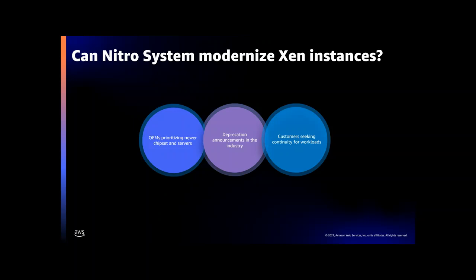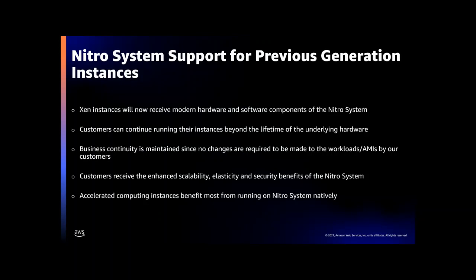AWS is in a unique position due to our size and 15 years of history. Today we have millions of customers still running tens of millions of Xen-based instances, and these customers value the stability and consistency that EC2 provides — especially the ability to run their workloads on the instance they were originally born on. So we asked ourselves: can we take those Xen instances and run them on the Nitro system? The answer is yes. We've announced that the AWS Nitro system will support the previous generation of general purpose, compute optimized, storage optimized, and memory optimized instances.